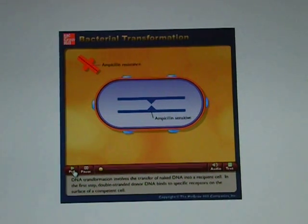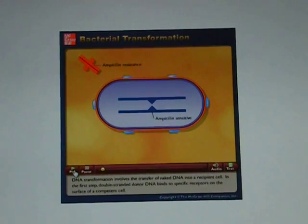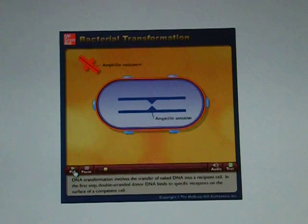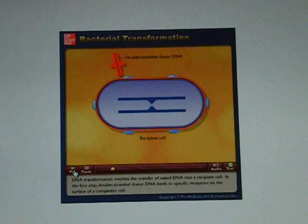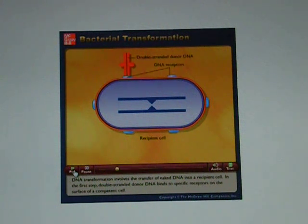DNA transformation involves the transfer of naked DNA into a recipient cell. In the first step, double-stranded donor DNA binds to specific receptors on the surface of a competent cell.